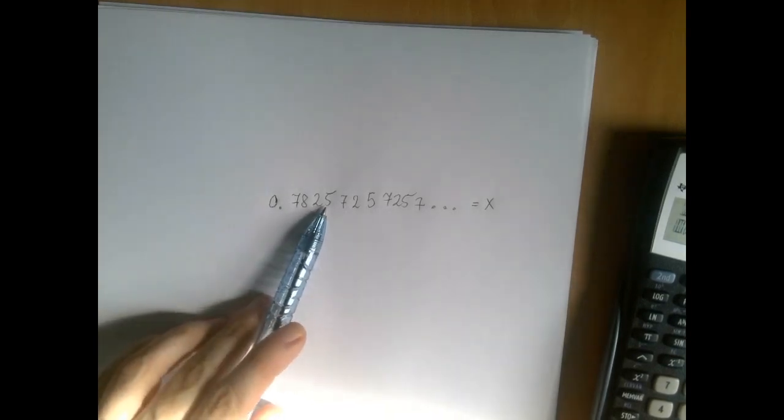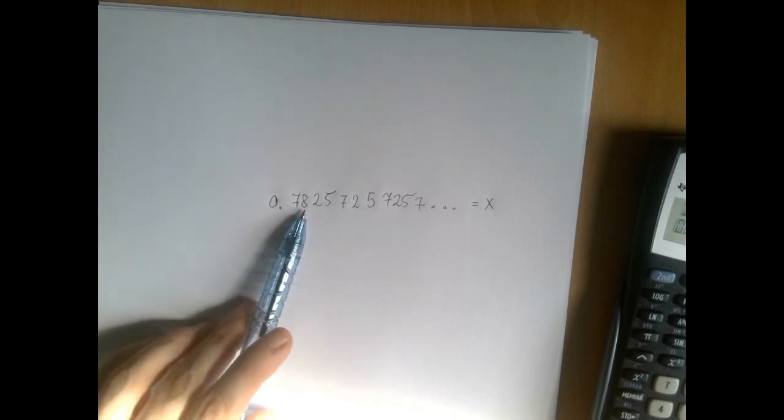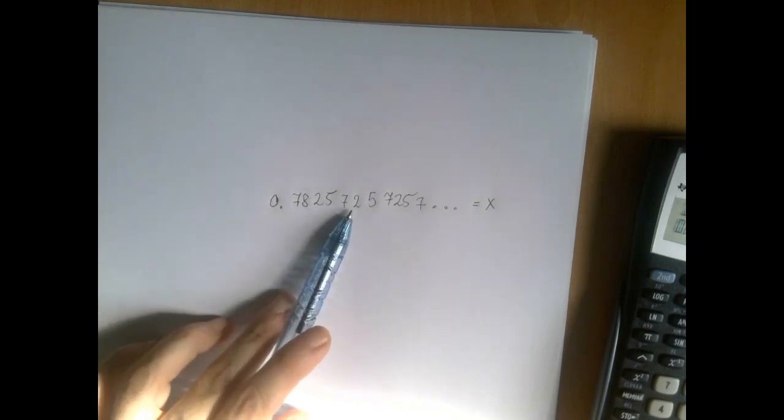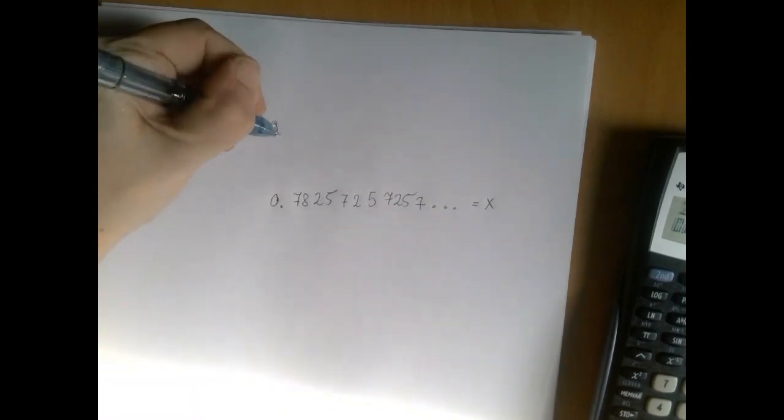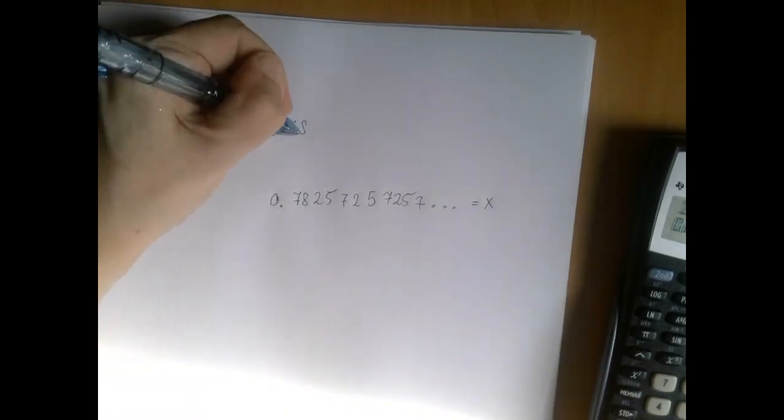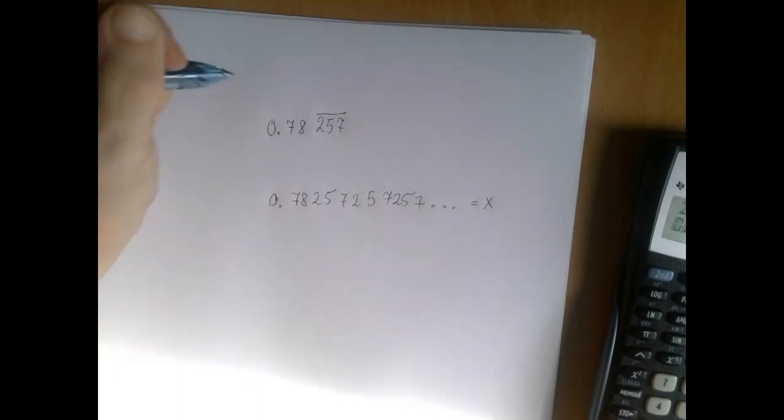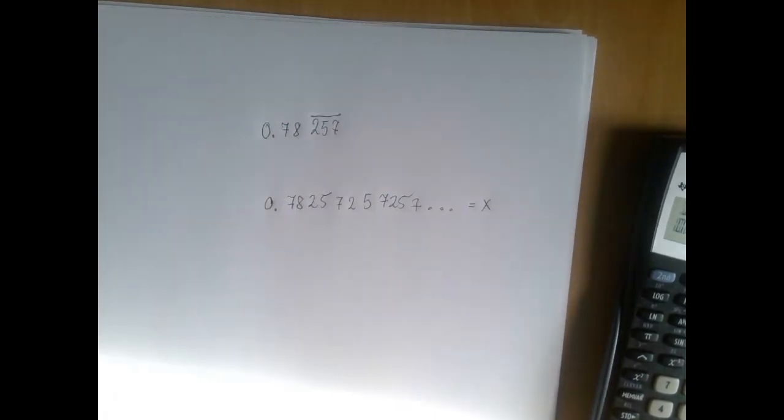7, 8, 2, 5, 7. The 8 does not repeat, but then 2, 5, 7, 2, 5, 7, 2, 5, 7. If we had to rewrite this number, we could write 0.78257 with the bar over 257. So the repeating block is three digits long.